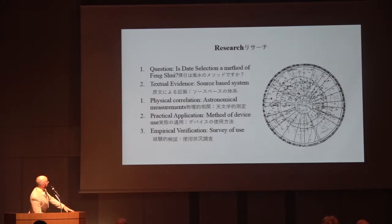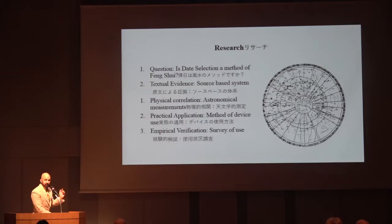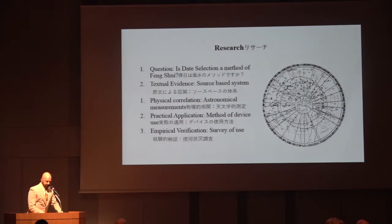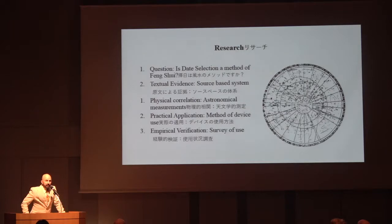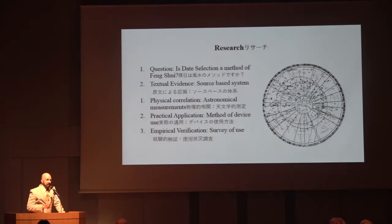These are the steps I'm going to follow today. First we have a question: is date selection a method of feng shui? When I start this, I start not wanting to prove it — I start with the question, finding out if it's true or false. Then textual evidence: we are a source-based system. Anyone who tells you otherwise is telling lies or has been lied to. We are not an oral tradition, and I think that's one of the failing points of modern feng shui. When a student says 'my teacher told me it's part of their lineage, it was never written down' — if it wasn't written down, it does not exist in feng shui.